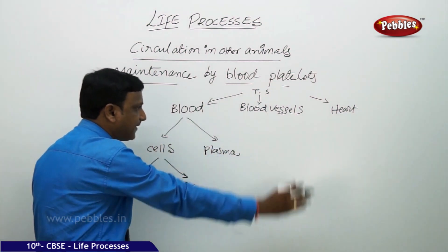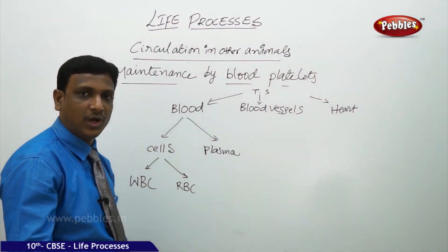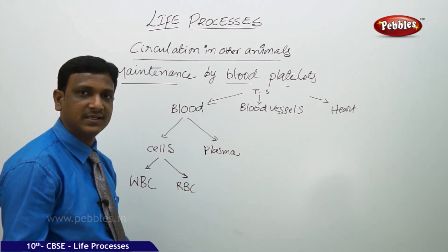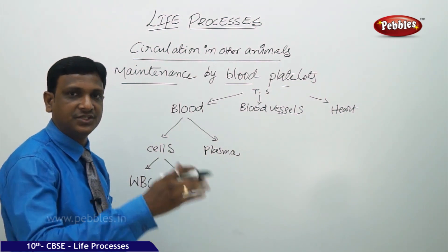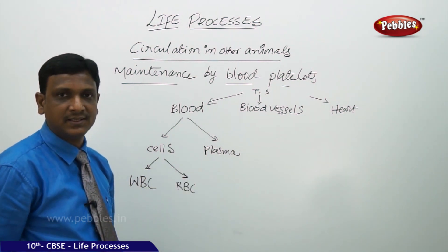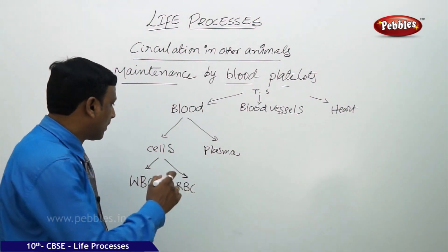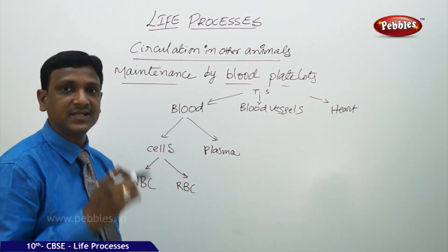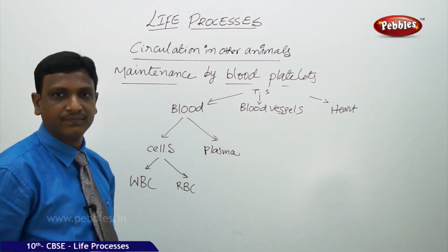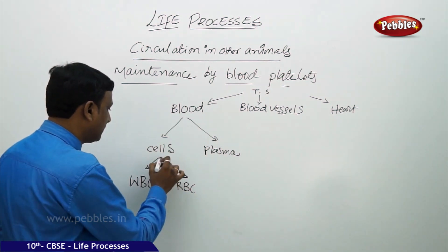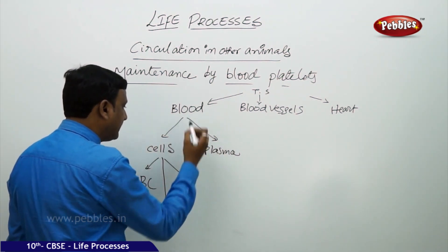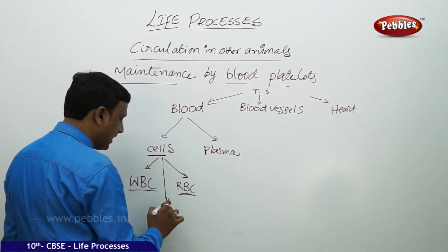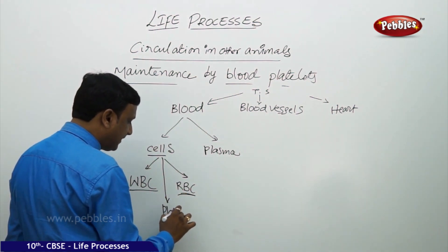We discussed about the different things which involve in the functioning — its major role: supply of materials, collection of materials, that is distribution, and circulation of materials. But sometimes there is one part of these cells which takes part in the maintenance and repair of the transport system. So the blood consists of cells — RBC, WBC — and along with that, the blood also contains platelets.